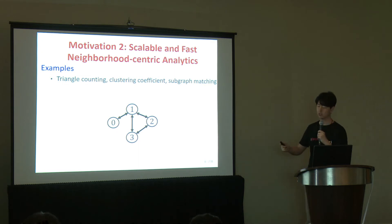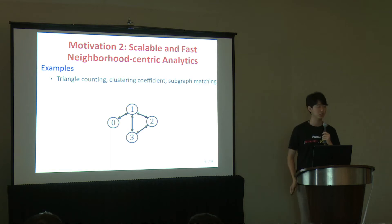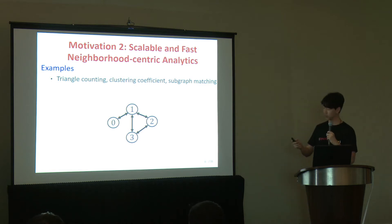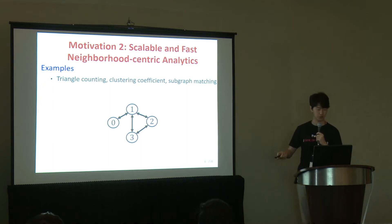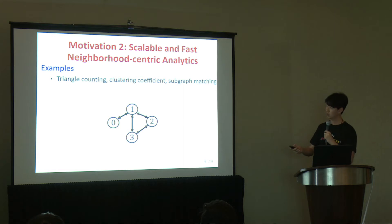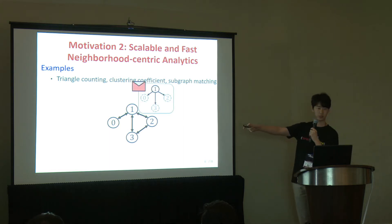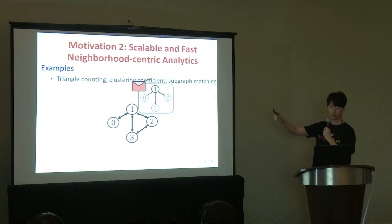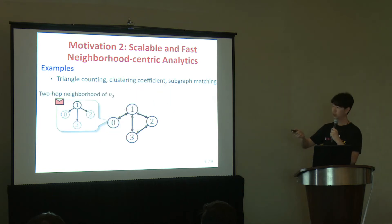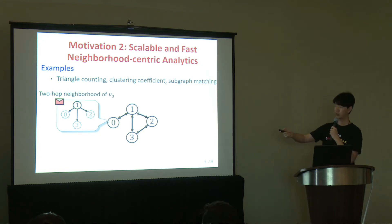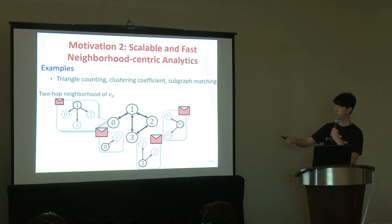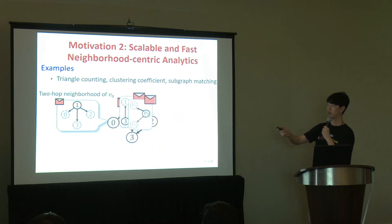Due to this limitation, vertex-centric systems encounter serious problems. For example in triangle counting, each vertex needs two-hop neighborhood. Because V1 is one-hop reachable from V0, V1's one-hop neighborhood data is encoded as a message and sent to V0. Then V0 can construct its two-hop neighborhood. The same applies for V1: messages are sent to V1 and it constructs its neighborhood.